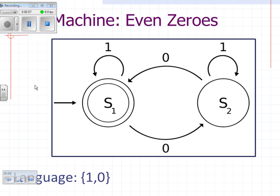But let's look at this machine here. It starts off in S1, which is the accepting state. So if you get no input, whatever you put in, nothing, is actually accepted. If you get a 1, it stays in the accepting state.